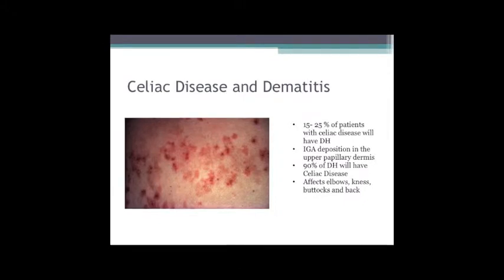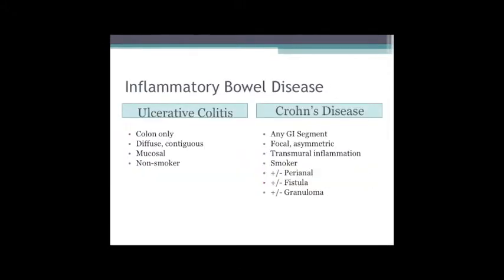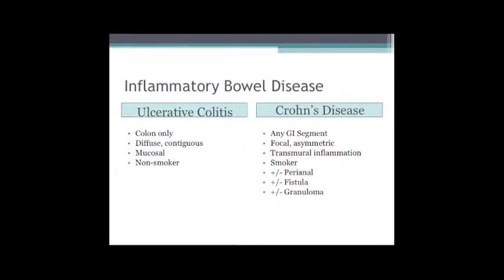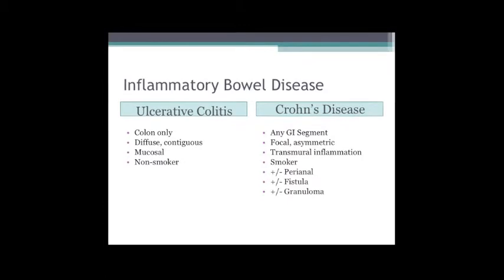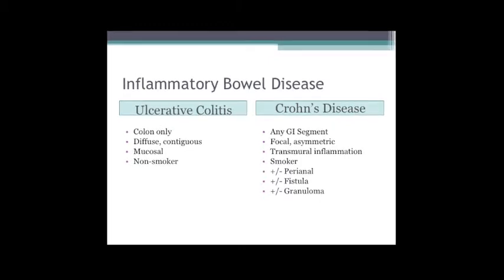We're going to finish up with inflammatory bowel disease. The therapies are going to be very similar for both Crohn's disease and ulcerative colitis. The features of ulcerative colitis: it's colon only, it's diffuse and contiguous, it's mucosal, and it's seen more commonly in non-smokers.